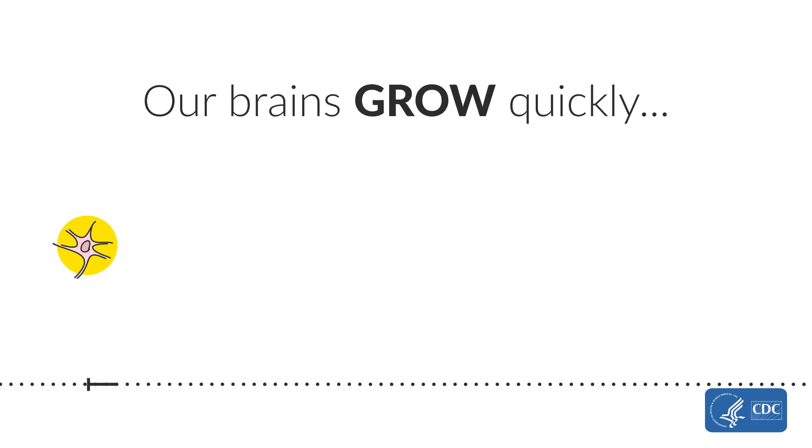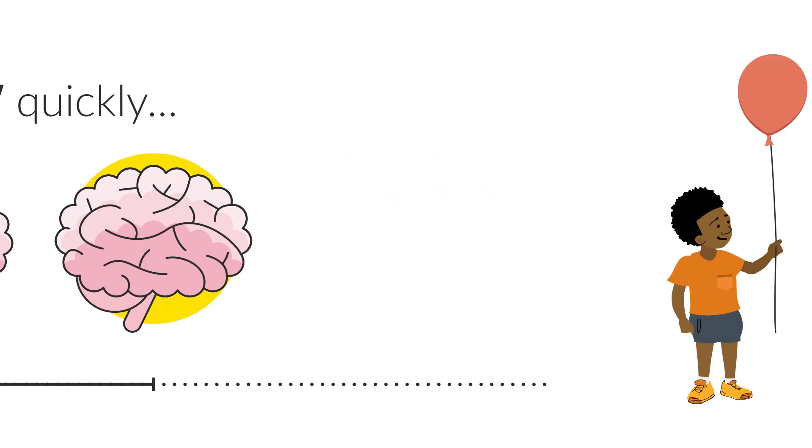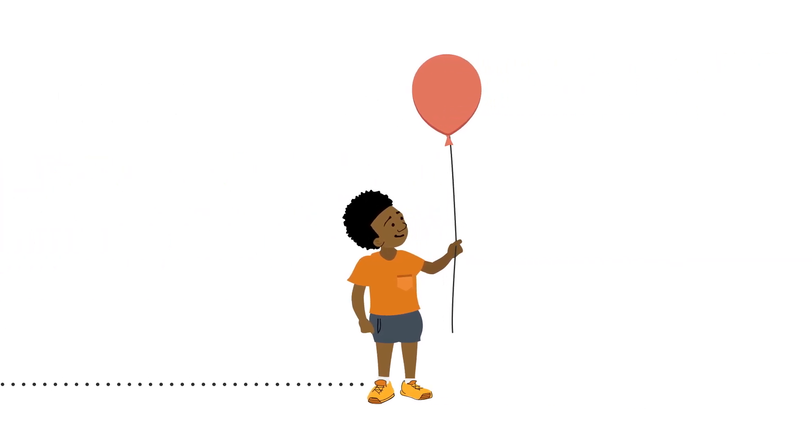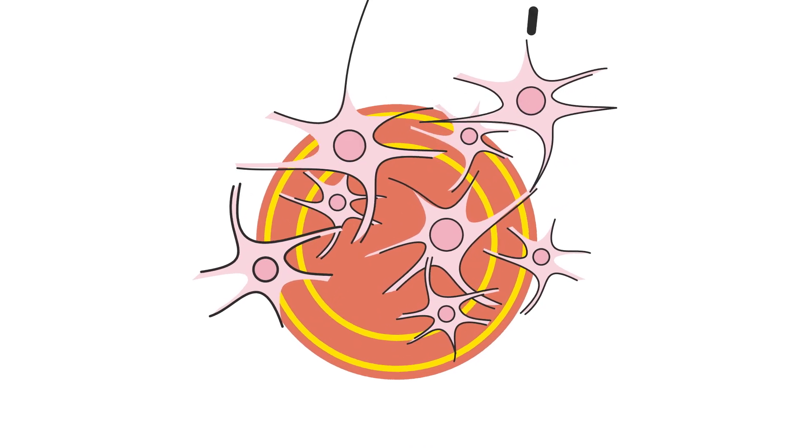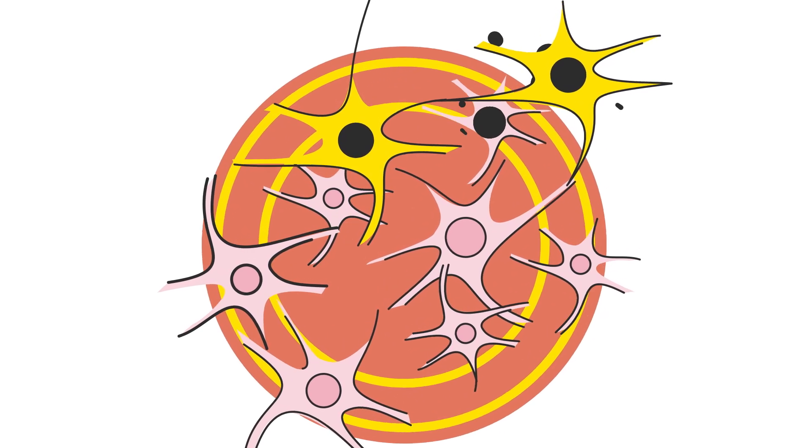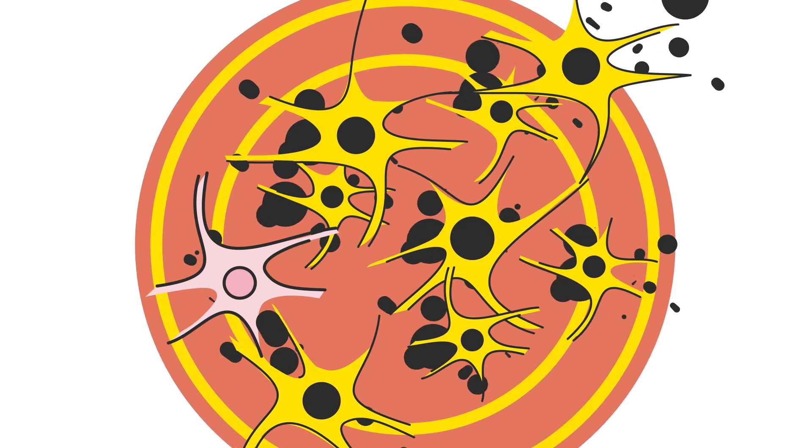Our brains grow quickly, starting before birth and continuing into early childhood. As a child interacts with the world, their experiences, both positive and negative, stimulate the brain, causing it to form neural pathways that lay the foundation for lifelong cognitive and behavioral functioning.